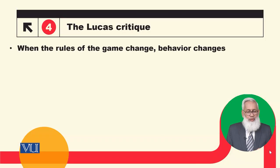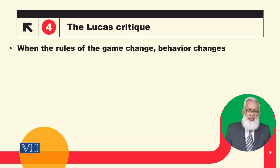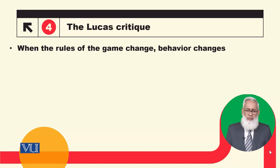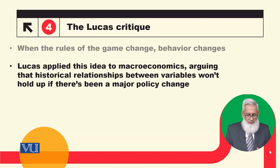Lucas has said in this context that when the rules of the game change, behavior changes. It is not possible that you change the policy rules and people behave according to the previous policy. When people know that policy will change, they will adjust their behavior accordingly. Lucas applied this idea to macroeconomics, arguing that historical relationships between variables would not hold if there has been a major policy change.